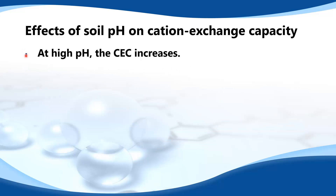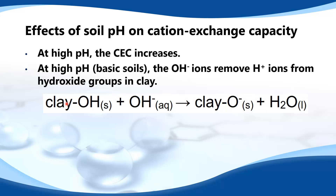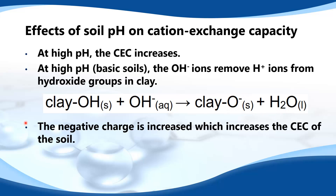At high pH the cation exchange capacity increases. At high pH, that's basic soils, the OH⁻ ions remove the H⁺ ions from the hydroxide groups in the clay. The hydroxide ions OH⁻ remove a hydrogen ion from the clay, giving a negative charge on the clay and producing a molecule of water. The negative charge is increased, which increases the cation exchange capacity of the soil.